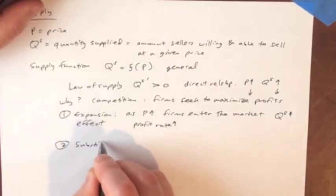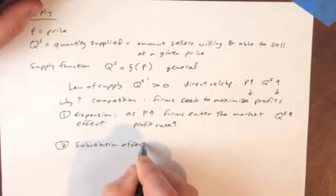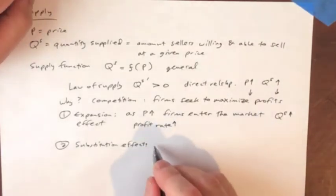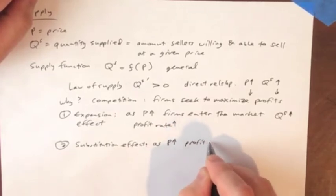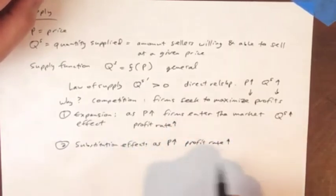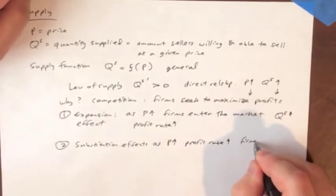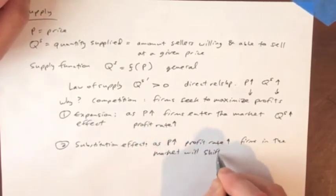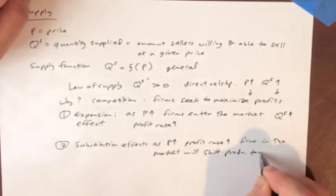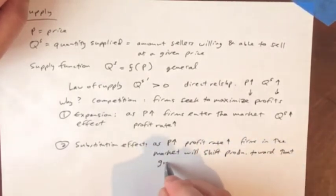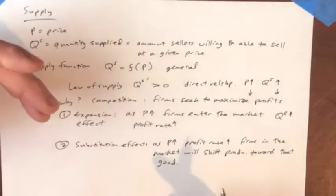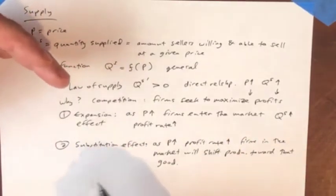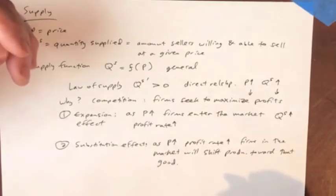Number two is the substitution effect for firms. Individuals, buyers also have a substitution effect. This one is different. This one says, as the price goes up, because that increases the profit rate of producing that particular good, firms that are already in the market will shift their production toward that particular good. They will perform a substitution within their market.